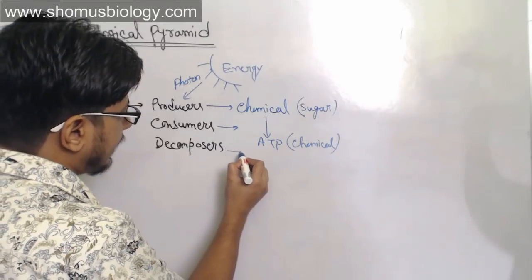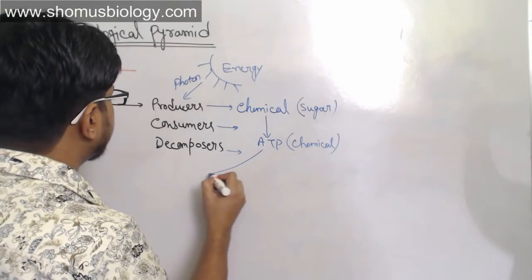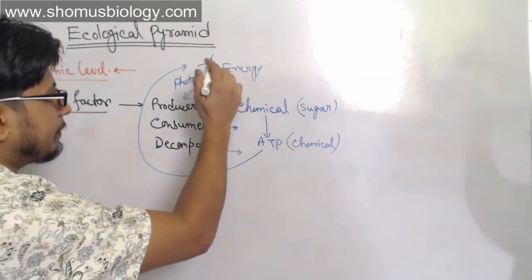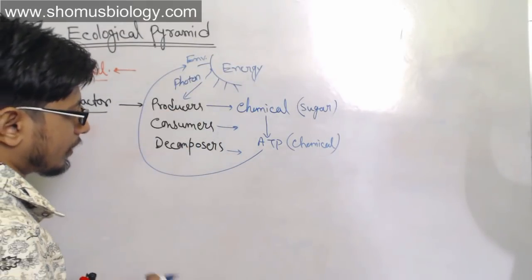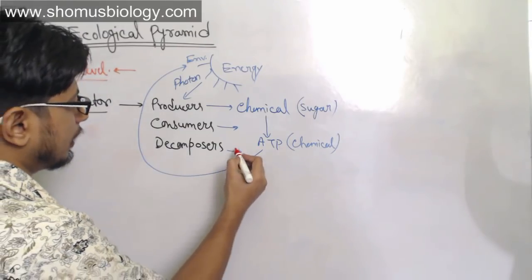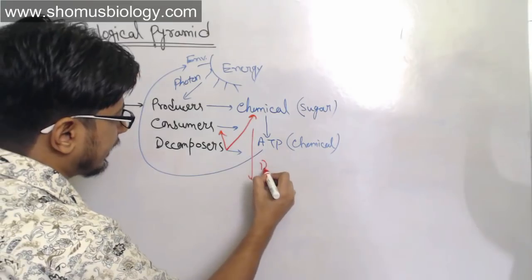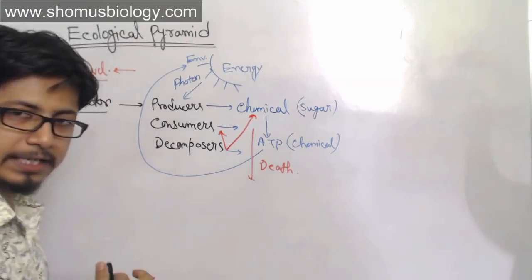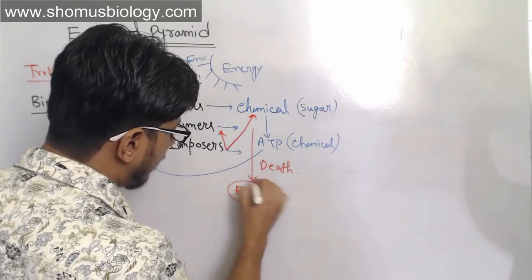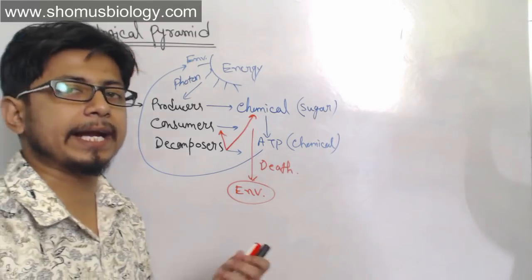Decomposers take the remains of both producers and consumers after death and return their materials back to the environment. This recycling effect ensures the environment is not depleted, because whatever organisms take from the environment is eventually returned through decomposition or other processes.